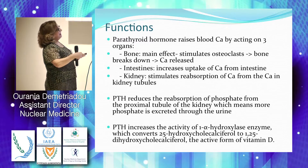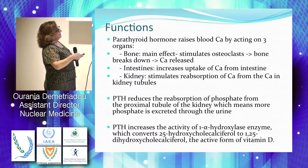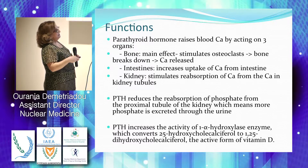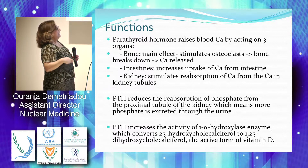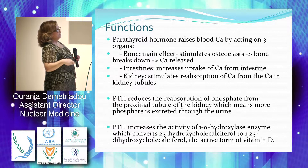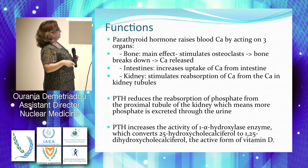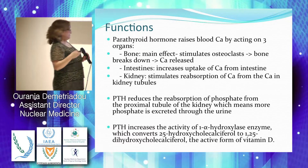PTH affects the osteoclasts of the bone, breaking down bone so calcium is released into the blood. In the intestine, it increases the uptake of calcium. In the kidneys, it stimulates the reabsorption of calcium in the kidney tubules, reduces the reabsorption of phosphate — meaning more phosphate is excreted through the urine — and increases the activity of the active form of vitamin D.